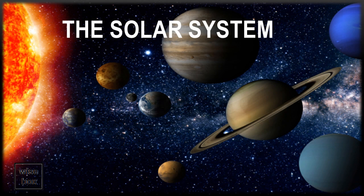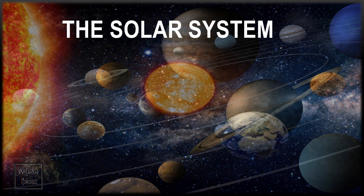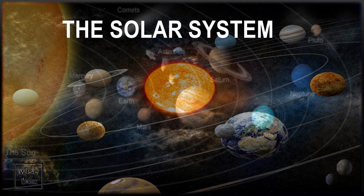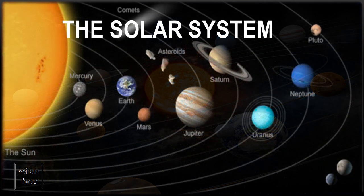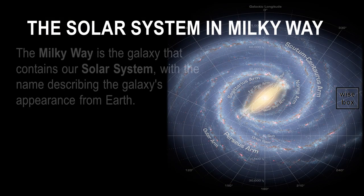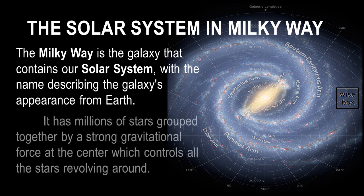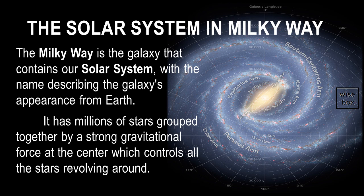The Solar System. The Milky Way is the galaxy that contains our Solar System, with the name describing the galaxy's appearance from Earth. It has millions of stars grouped together by a strong gravitational force at the center which controls all the stars revolving around.